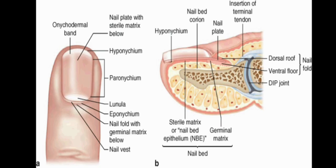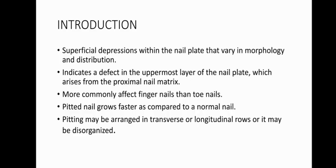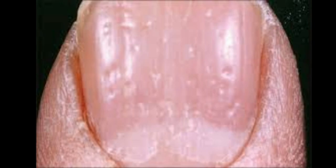These two images show the normal anatomy of the nail. So what is nail pitting? Pits are superficial depressions within the nail plate that vary in morphology and distribution. The presence of nail pitting indicates a defect in the uppermost layer of the nail plate, which arises from the proximal nail matrix. It commonly affects the fingernails more so than the toenails. The pitted nail grows faster than a normal nail. Pitting may be arranged in a transverse or longitudinal fashion, or it may be disorganized in distribution. This clinical photograph shows nail pitting.